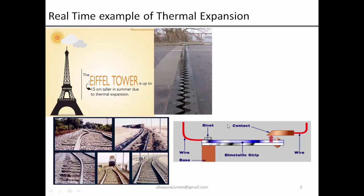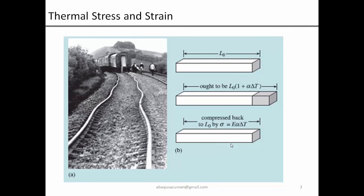Railway tracks sometimes get bent because of thermal expansion. People also use thermal expansion to their advantage — thermostats in water heaters or refrigerators use a bimetallic strip of steel and copper or brass. Because the two different materials have different thermal expansion coefficients, the strip bends. When temperature is on the higher side it bends downward, reducing the contact.